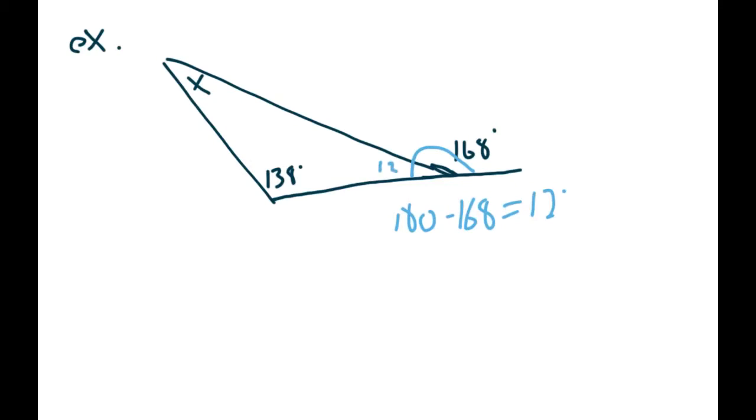And then now we've got a triangle. So we know that that top angle, we can use a 180 rule for the triangle. So we'd have 180 minus 138 minus 12. So that'll give us 150. So 180 minus 50 is 30.